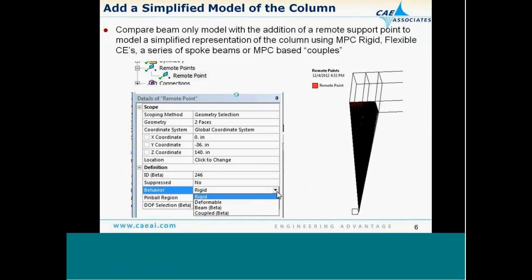To increase accuracy, one option is to extend the model further into the actual physical geometry using what's called a remote point. I can put a remote connection to tie the top of the column to the beam without explicitly modeling it in finite elements. In the remote point feature, I have several different options for characterizing the behavior between the surface at the top of the column and the connection point - rigid, deformable, beta beam connection, and a coupled connection.